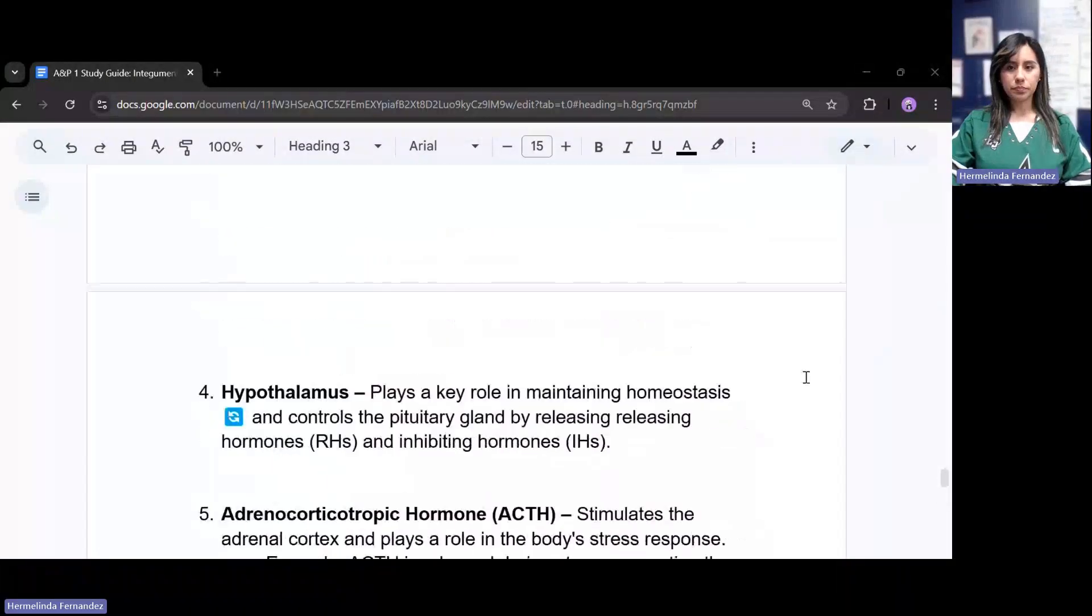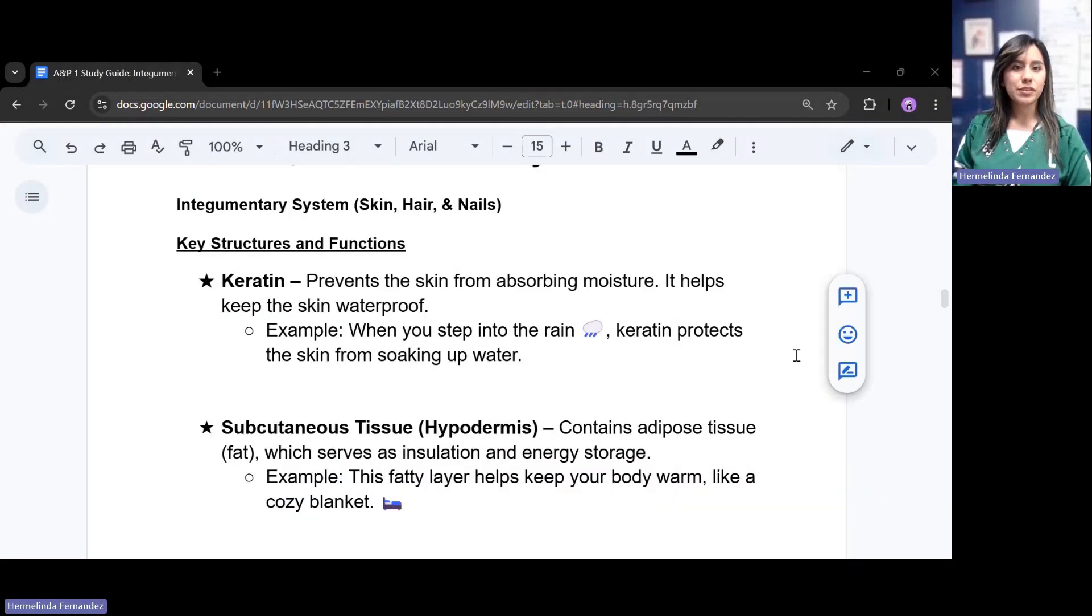Hey everyone, so in this video I will be going over the final review for AMP1, so this will cover the integumentary system, the nervous system, and the endocrine system. Let's go ahead and get started. I'm going to share this screen. So let me have first the integumentary system, so this includes the skin, hair, and nails, the key structures, and the functions.